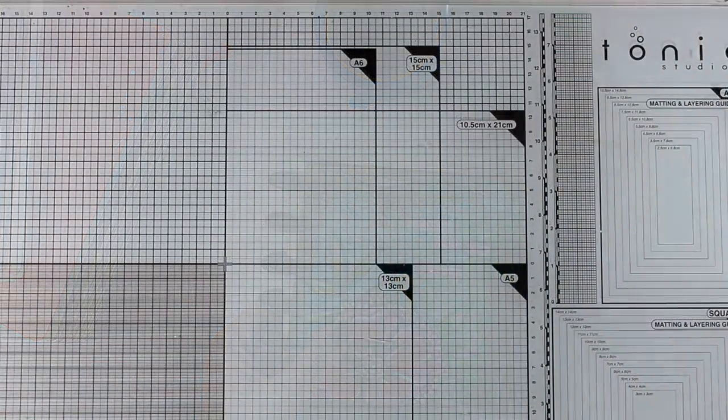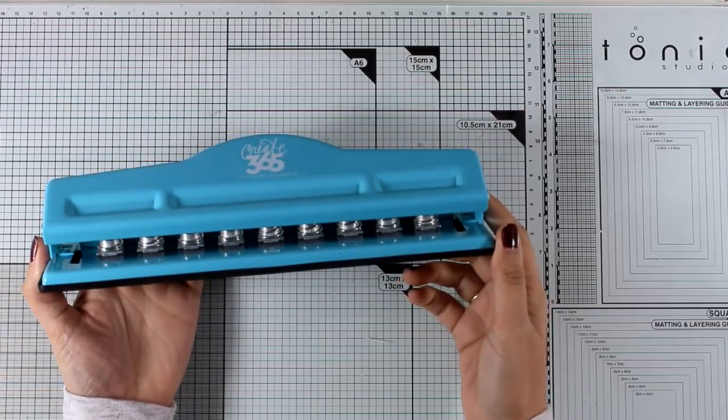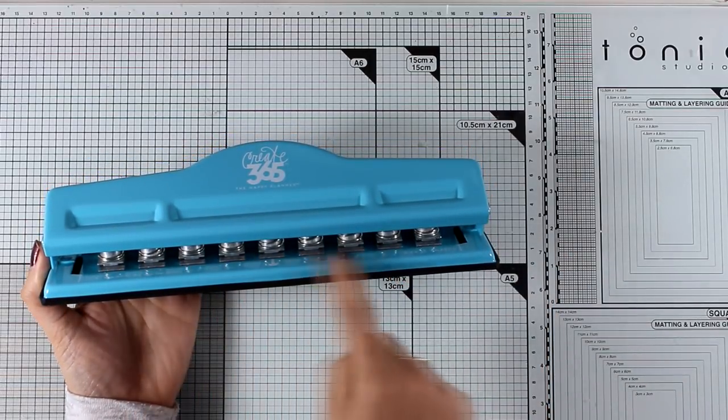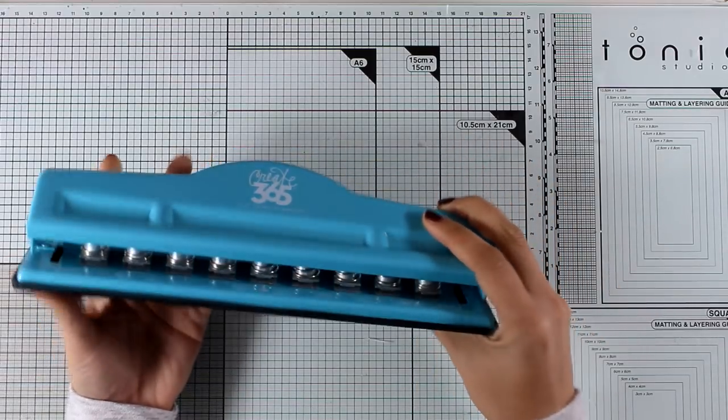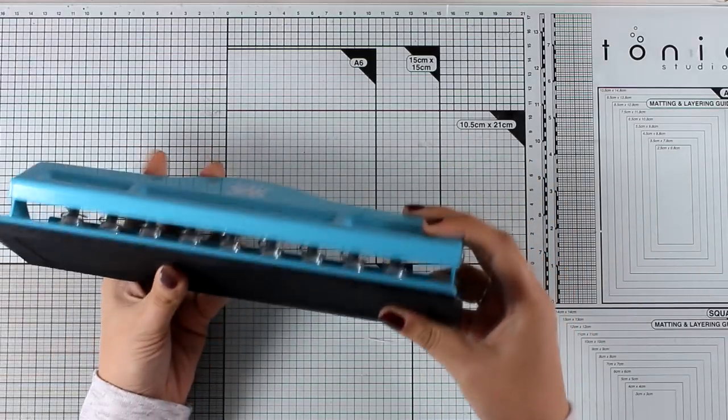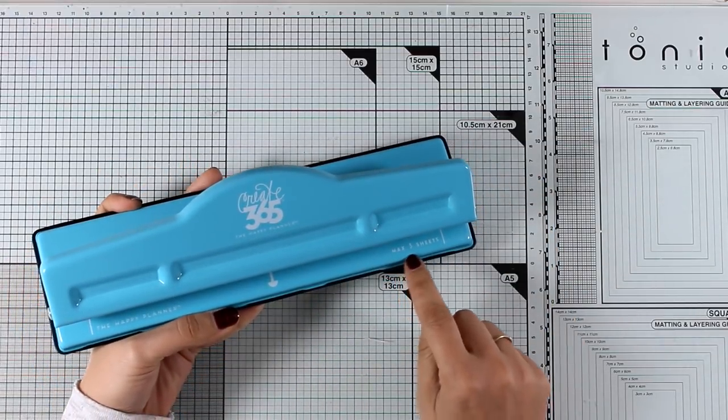And this is the punch that I have to create my own custom-sized art journals. So this has nine holes and it is actually by Me and My Big Ideas from their Happy Planner collection. Now this punch is actually on sale right now, so maybe you want to check it out.